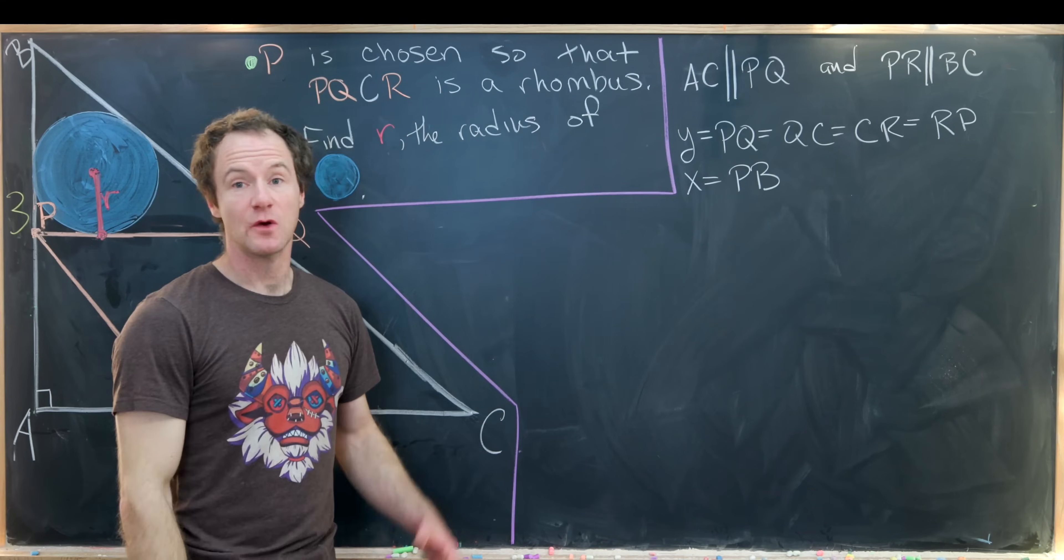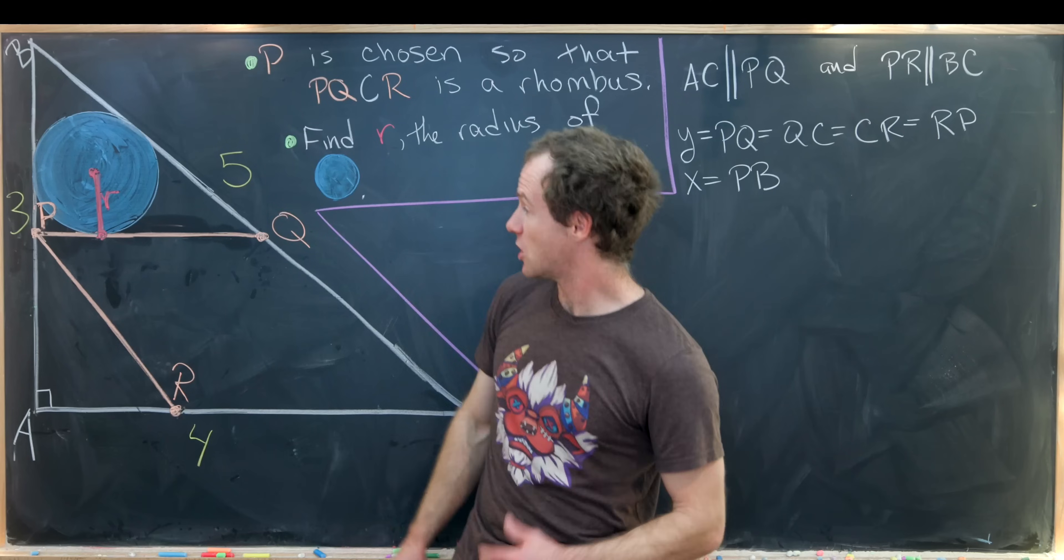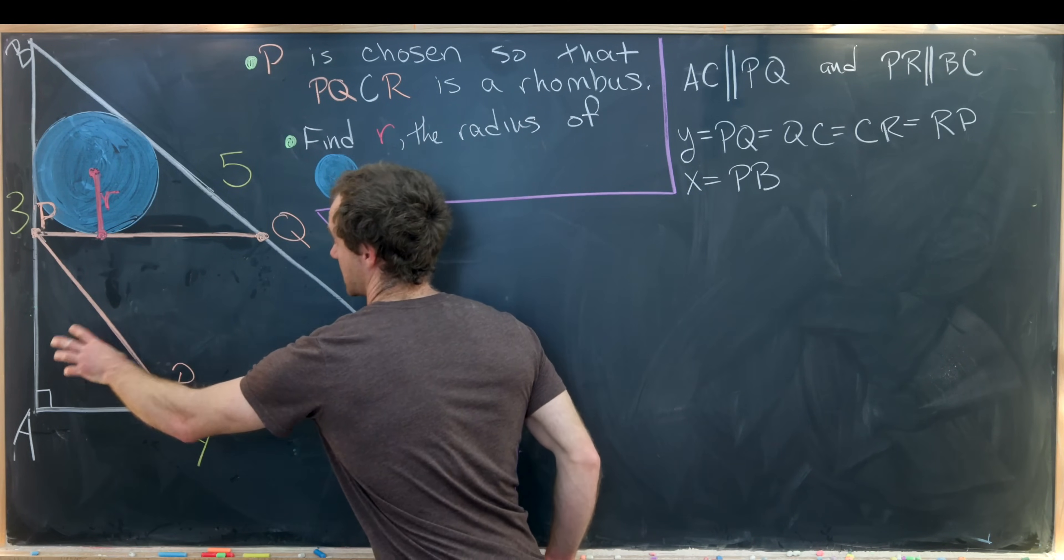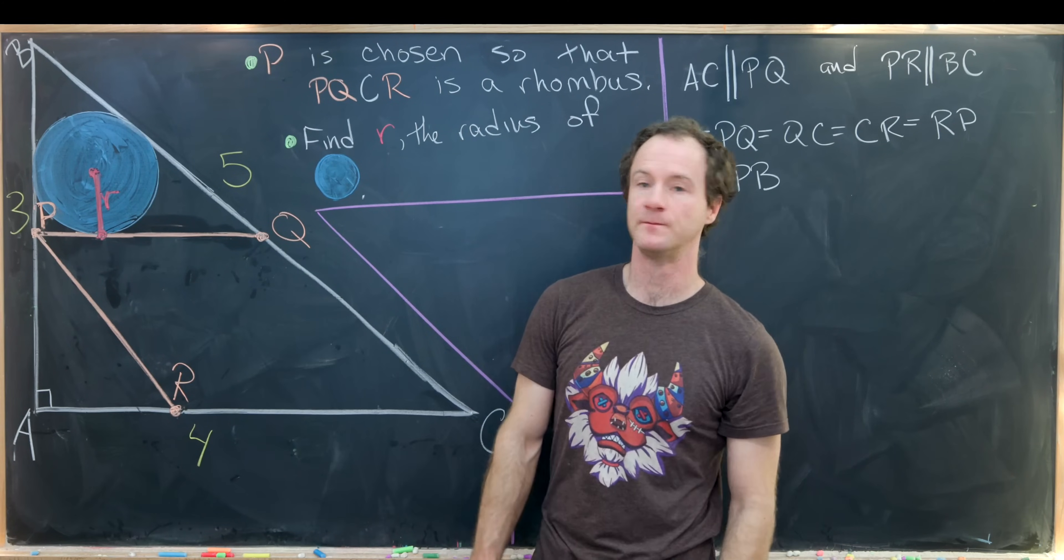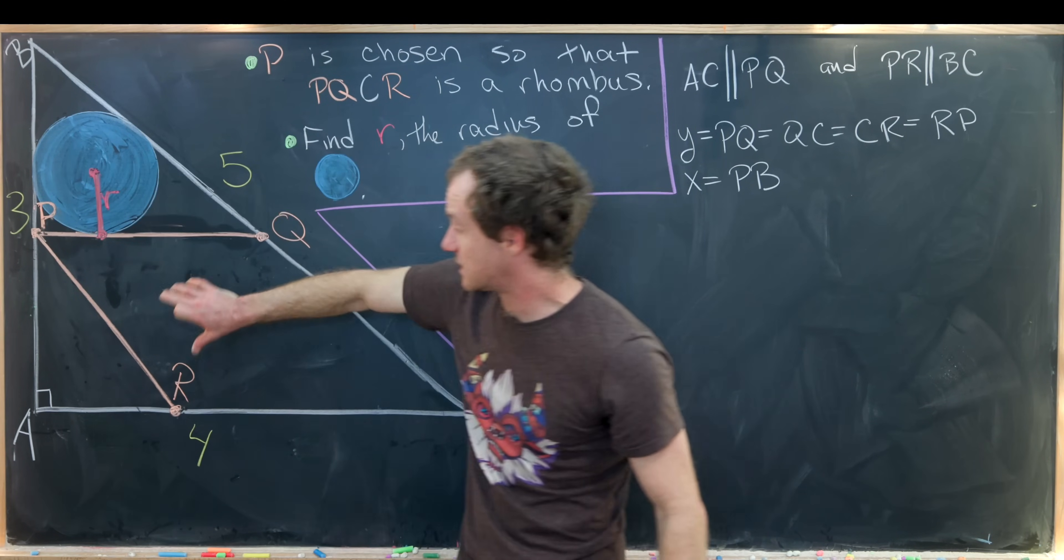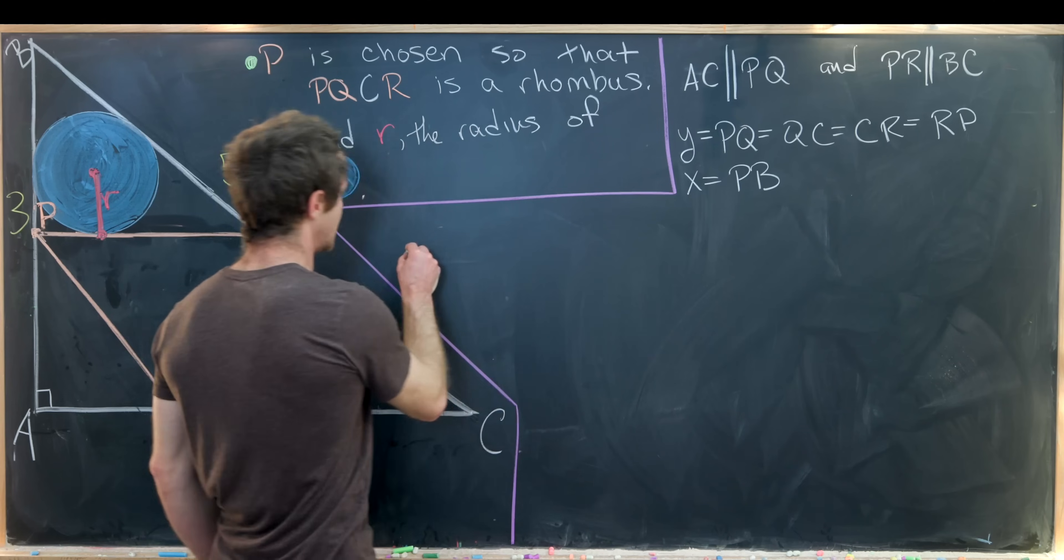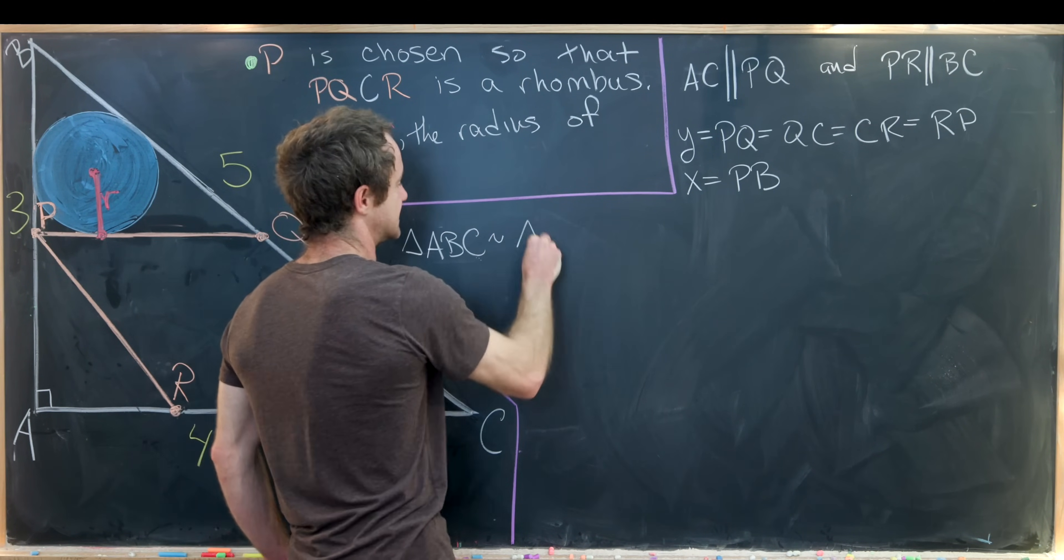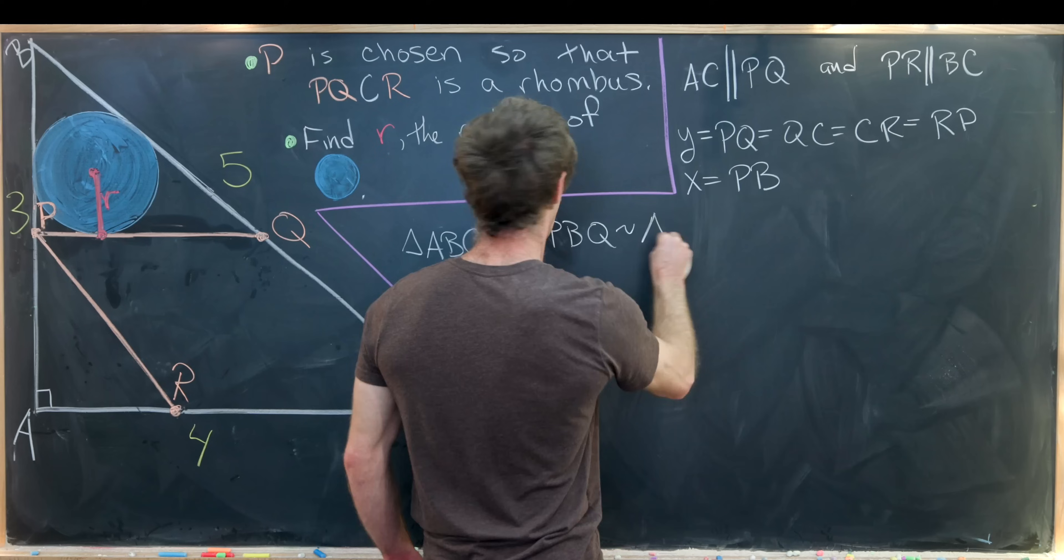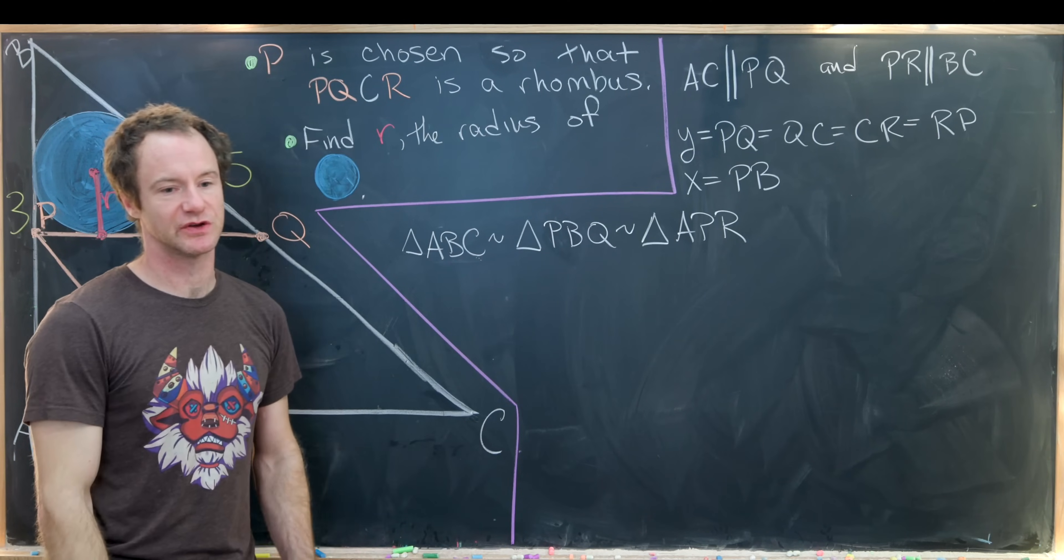Because of this parallel condition, we actually get three triangles in this situation that are similar. Since PR is parallel to BC, we know this triangle sitting down here is similar to the large triangle. Furthermore, since PQ is parallel to AC, we know this triangle sitting up here is similar to the large triangle and thus similar to this triangle. So in the end, we know that triangle ABC is similar to triangle PBQ and similar to triangle APR.